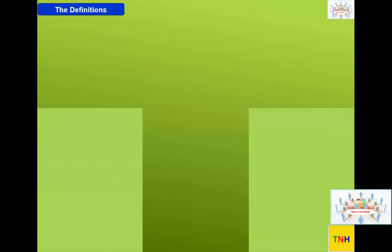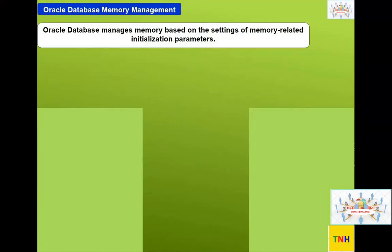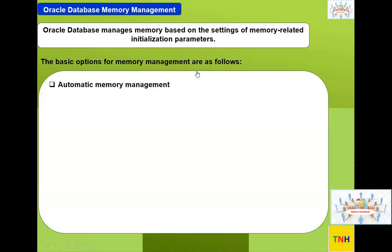These are all done definitions. So the parameter setting: Oracle database manages memory based on the settings of memory-related initialization parameters. The basic options for memory management are as follows. We can do automatic memory management, known as AMM.